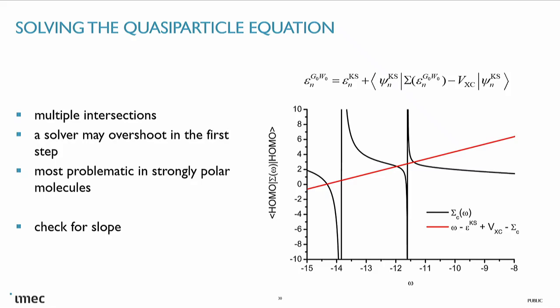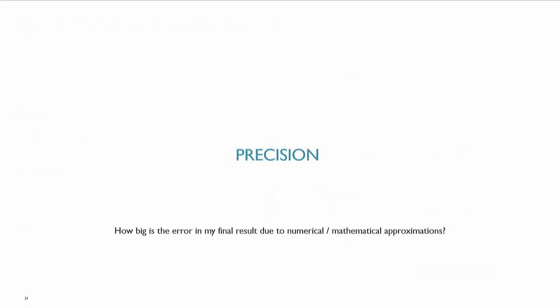Next step is precision — this is about the error in my final result due to numerical and mathematical approximation. I'm not talking about the type of self-consistency here; I just decide I'm going to do this kind of GW with this exchange-correlation functional as a starting point. What is the effect of my decisions? First thing to look at is basis sets. When we want to compare local orbital codes and plane-wave codes, we need to do a basis-set extrapolation for both to make sure we're actually comparing the right things. I cannot compare a quadruple-zeta basis set with a plane-wave directly. For local orbital codes, we use a standard type of basis-set expansion, and we can get to the same extrapolated results.